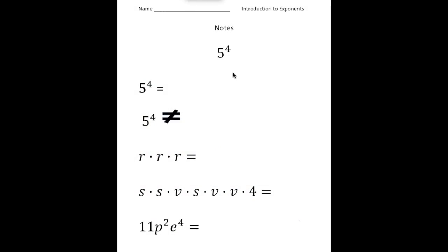Alright, so take a look here. We have 5 to the 4th power. So let's first identify the parts of this. This 5 — that's called the base, so please write that in. Now the 4, this can be called one of two things: this is either the exponent or the power.